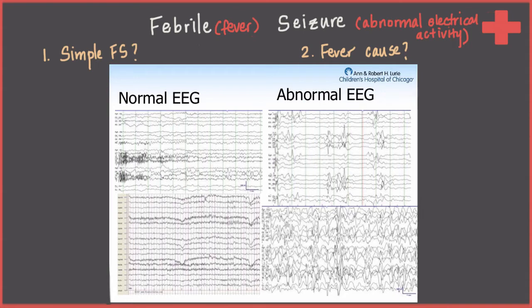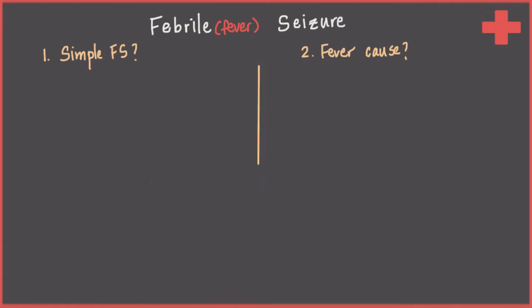I just wanted to show you what seizures in general look like on the EEG. We'll talk about febrile seizures, which is a kind of seizure that stands alone and happens from the fever in kids. But in people who do have epilepsy — people of all ages who have a long-term seizure disorder — they can also have seizures with fever because the fever lowers the threshold they already have to seizures. Epilepsy or other long-term seizure disorders is not what we're talking about today.